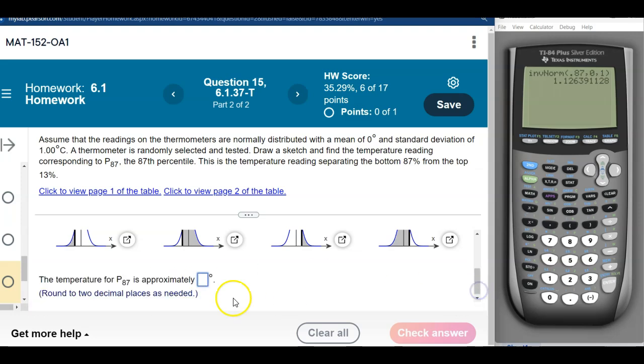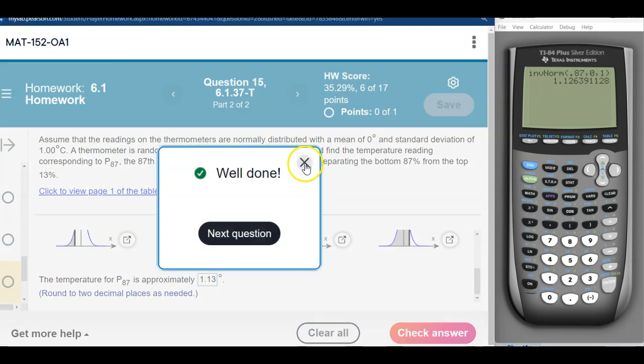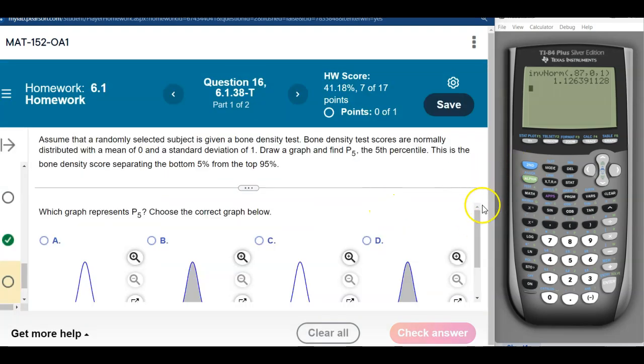So again, make sure you're looking at how many decimal places because z-scores are typically rounded to two places. Probabilities are typically rounded to four. So you want to make sure you get these right. So this is 1.13 to two places. All right, so that inverse norm can take in area to the left, percentiles as well, and return the number that has that area to the left, which is what we mean by the, and again in this case, the 87th percentile.